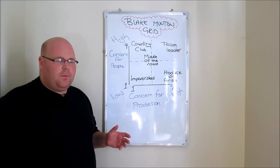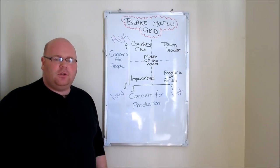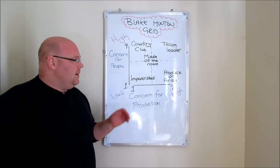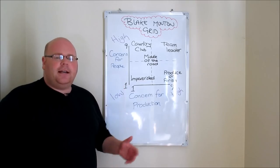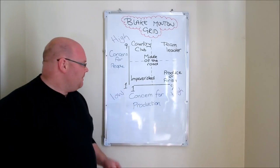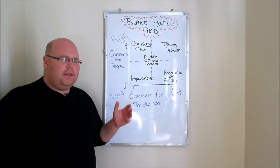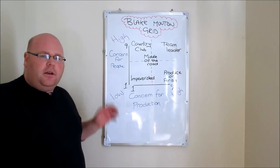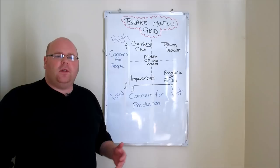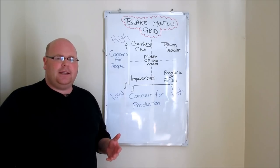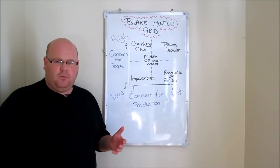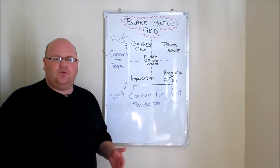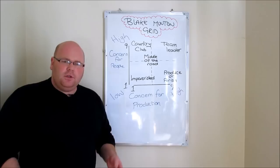In order to understand the Blake Mouton Grid, before we look at the different classifications that Blake and Mouton came up with in terms of the type of leadership style that people might adopt, we first have to look at the axes to understand what differentiates one management style from another. Starting on the left-hand axis, the first thing that might classify someone's approach is their concern for people — meaning the people that were part of the team the manager or leader was in charge of.